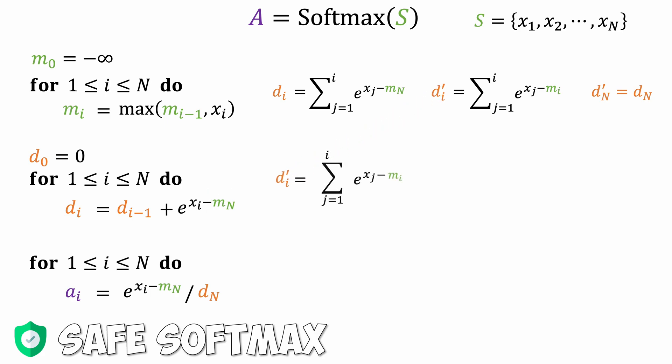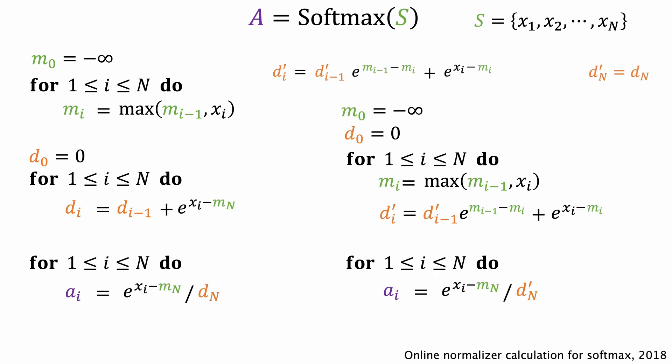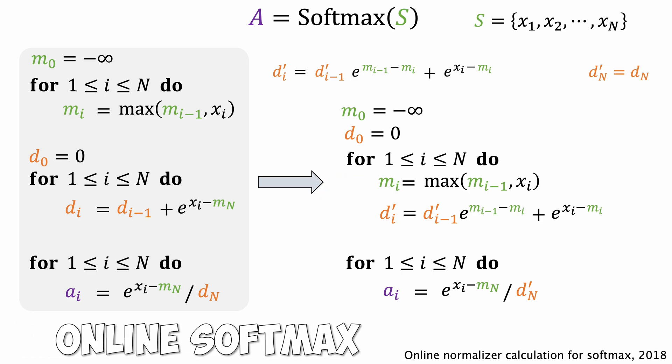But how do we compute the sequence di' iteratively? We first separate the i-th item from the summation. We then multiply a dummy value of 1 here. Since multiplication is associative, we can swap these two terms. Now we recognize that the summation in the parenthesis is just di-1'. This gives us the recurrence relation between di' and di-1'. Using this recurrence, we can implement the softmax function by just two passes over the sequence. We merge the two full loops into 1 because the recurrence only depends on mi and mi-1, not mN. This is the idea of online softmax.